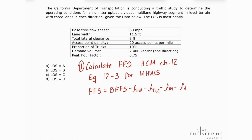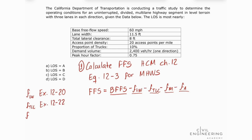Let's take a closer look at this equation. Our base free flow speed was given as 60 miles per hour, and from this we subtract four reduction factors. For F_LW (lane width adjustment), we look at exhibit 12-20. For F_TLC (total lateral clearance adjustment), we look at exhibit 12-22. For F_M (median type adjustment), we look at exhibit 12-23. And for F_A (access point density adjustment), we look at exhibit 12-24.